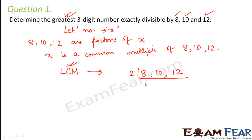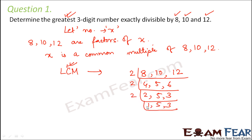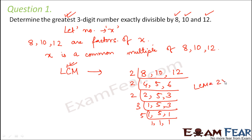So we find the LCM of 8, 10 and 12. Breaking them down: 8 = 2×4, 10 = 2×5, 12 = 2×6; further 4 = 2×2, 6 = 2×3. Continuing the prime factorization, LCM = 2 × 2 × 2 × 3 × 5 = 8 × 3 × 5 = 24 × 5 = 120. Therefore, the least common multiple is 120, so 120 is the smallest common multiple of 8, 10 and 12, and it is also a 3-digit number.